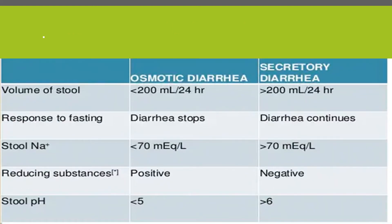When we compare osmotic diarrhea and secretory diarrhea: osmotic diarrhea causes less volume loss compared to secretory diarrhea, which causes a large loss of fluid. Osmotic diarrhea stops when the child stops feeding, whereas secretory diarrhea doesn't stop despite fasting. Stool pH is less than 5 in osmotic diarrhea and greater than 6 in secretory diarrhea. Reducing substances are more often positive in osmotic diarrhea, and stool sodium is high in secretory diarrhea.